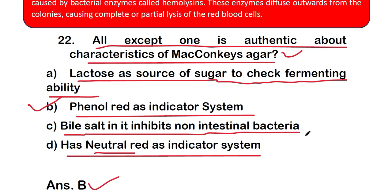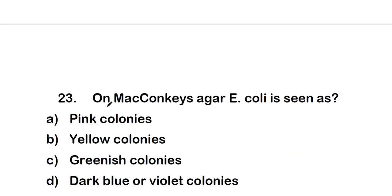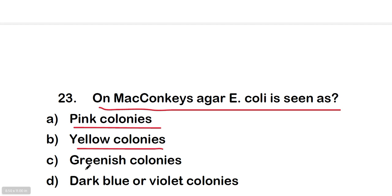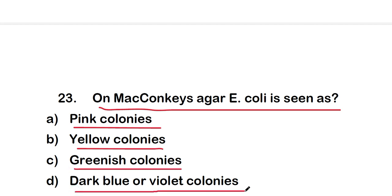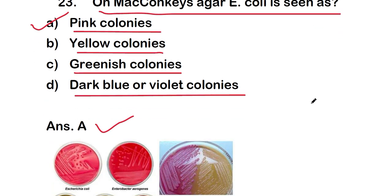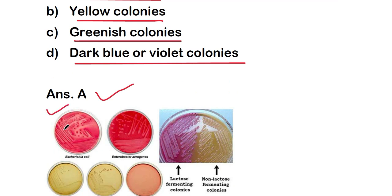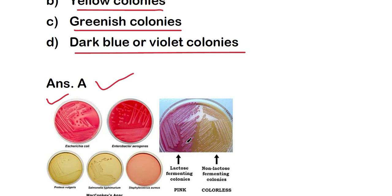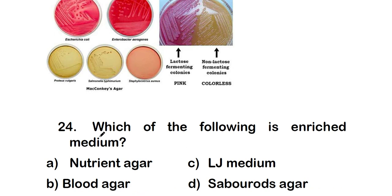Question 23: on MacConkey's agar, E. coli is seen as which type of colonies? Option A: pink, B: yellow, C: greenish, D: dark blue or violet. The right answer is option A — pink colonies. E. coli shows pink colonies as lactose-fermenting colonies, while non-lactose fermenting colonies produce yellow colonies. The color indicator used is neutral red.